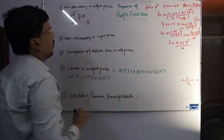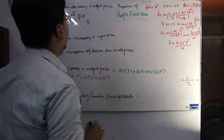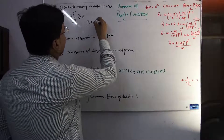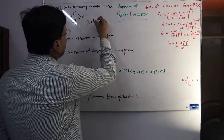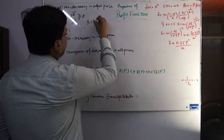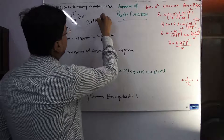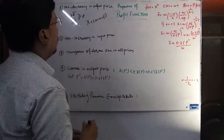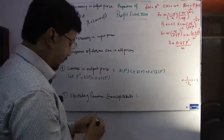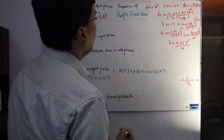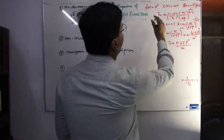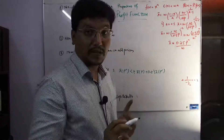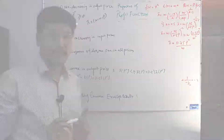Recalling the profit function from the previous lecture: the profit function is a function of input prices W and output price P. We discussed a problem and calculated a profit function in the earlier lecture on the profit function.